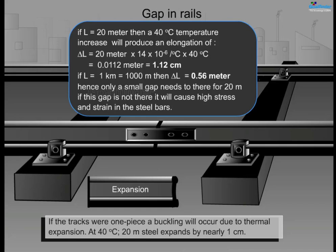If L = 1 kilometer (1000 meters), then ΔL = 0.56 meters. Hence only a small gap needs to be provided for every 20 meters. If this gap is not there, it will cause high stress and strain in the steel bars.